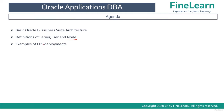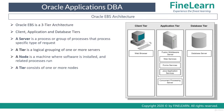By using these deployments and the examples of these deployments, we will understand much better about server, tier and node. Oracle eBusiness Suite architecture is basically a 3-tier architecture. It consists of client tier, application tier and database tier.